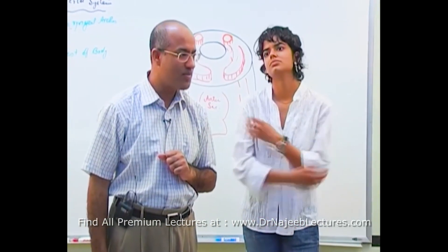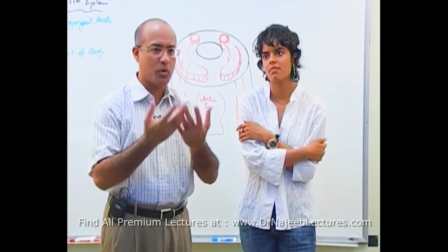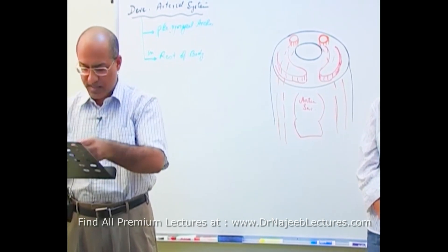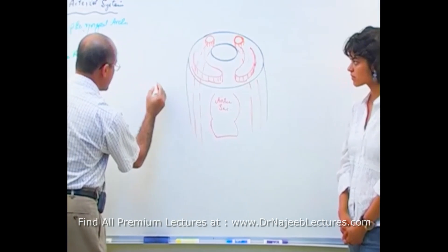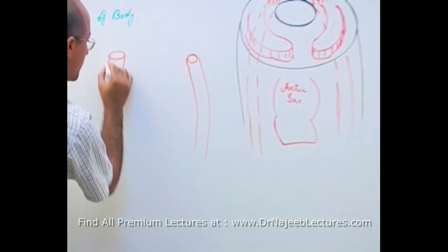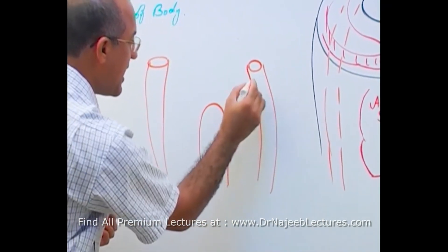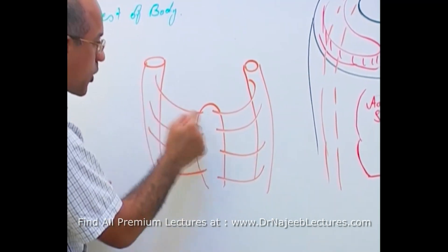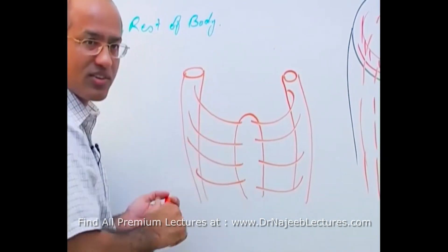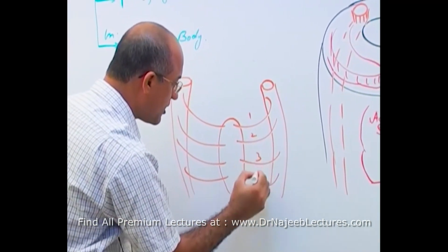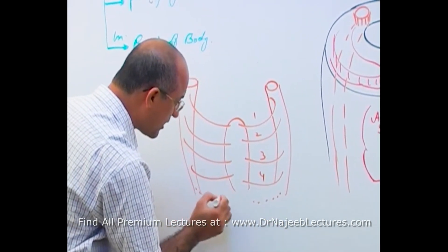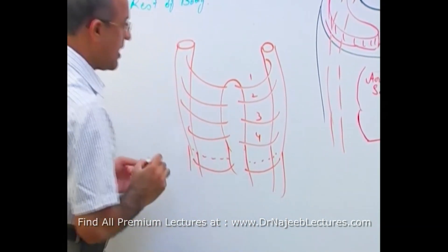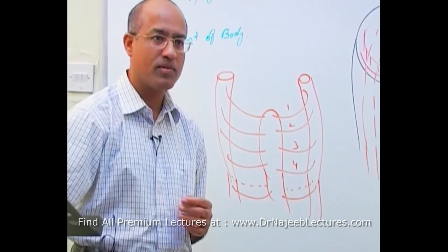Every arch has its own paired artery — one on the left side and one on the right side — connected ventrally with the aortic sac and dorsally with the dorsal aorta. These vessels are called aortic arches, or pharyngeal aortic arches. So the aortic arches are: first, second, third, fourth, and sixth. The fifth either does not develop or undergoes regression.